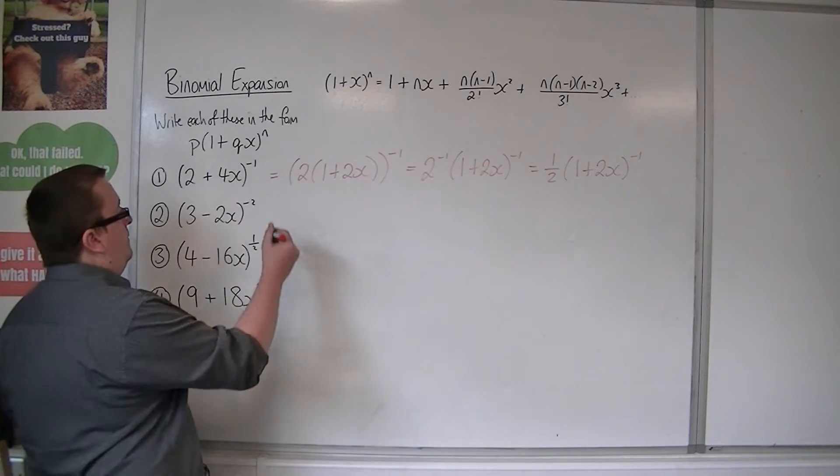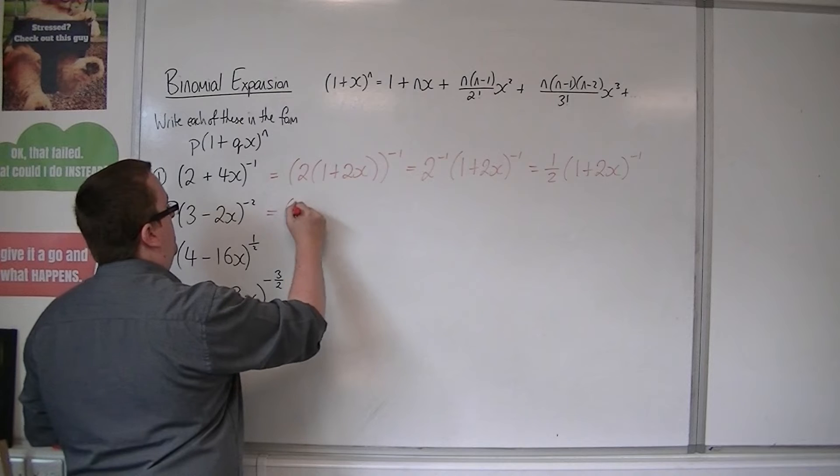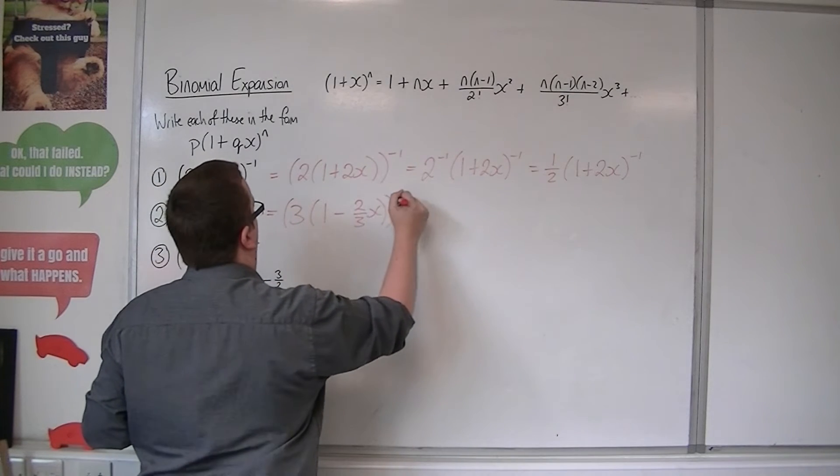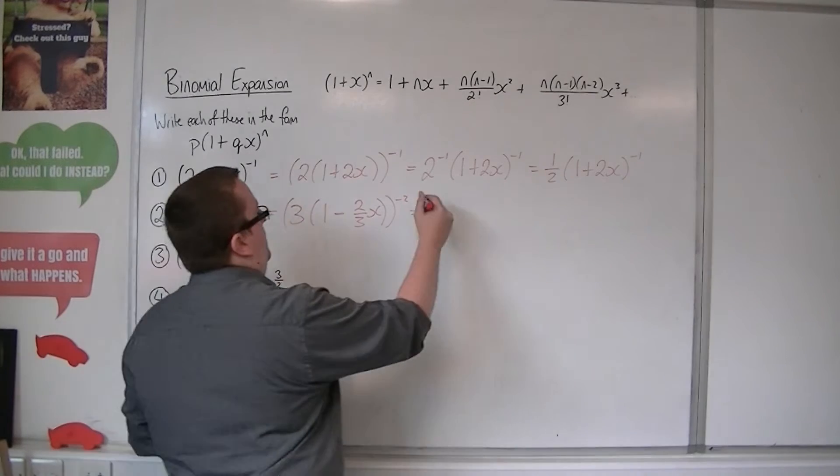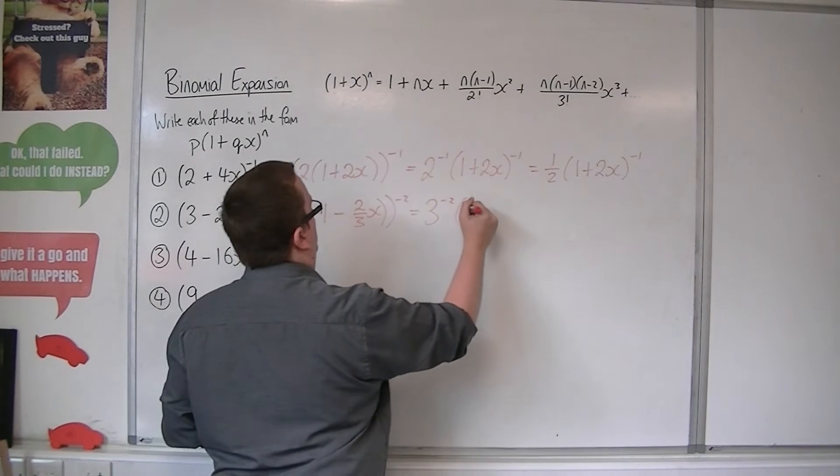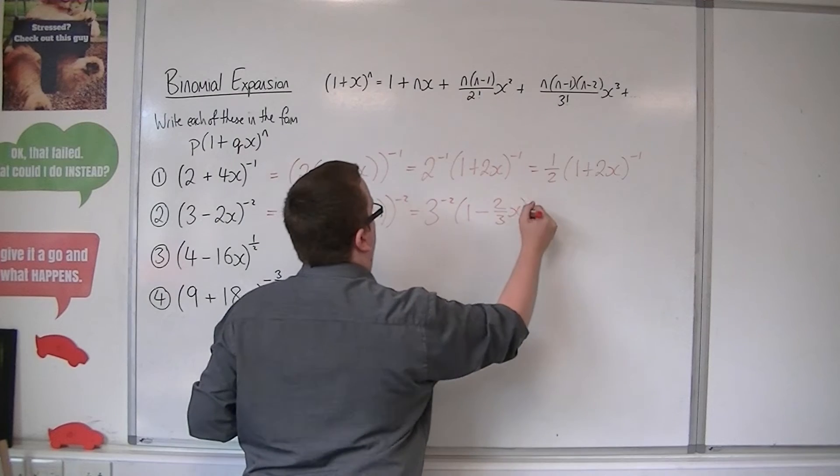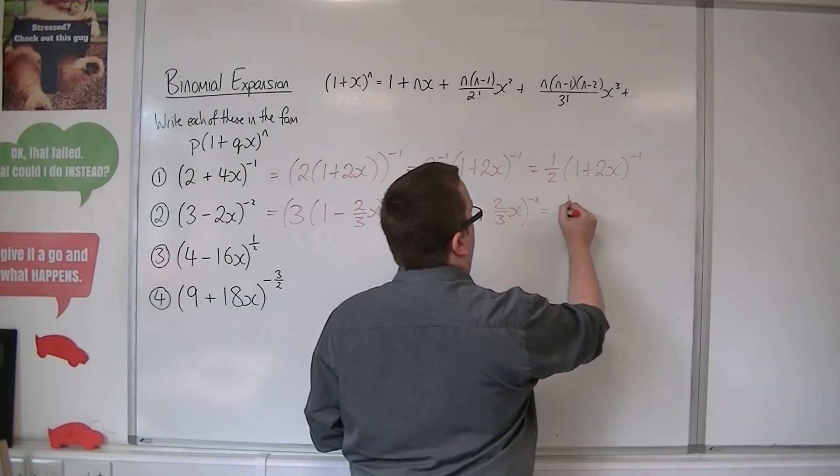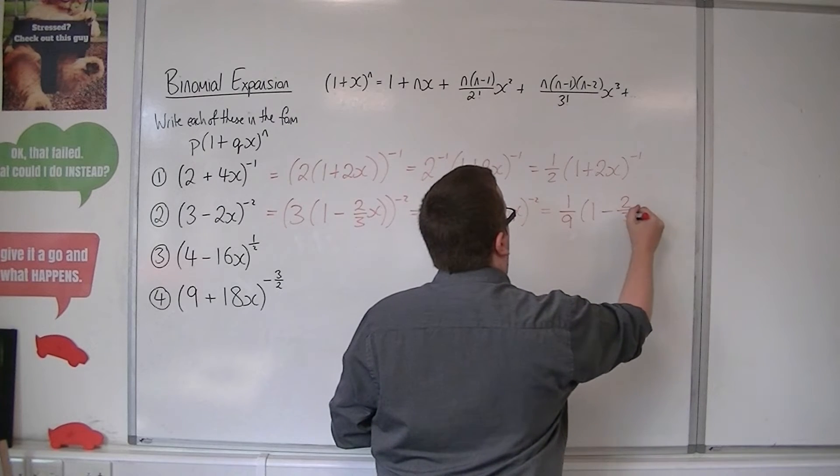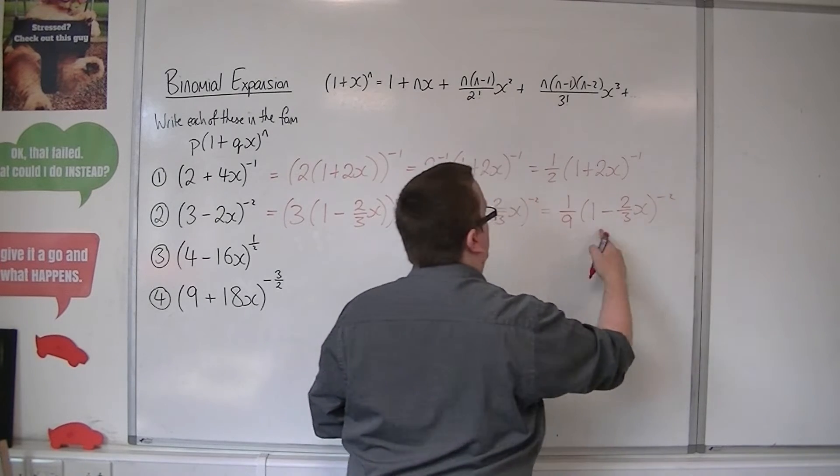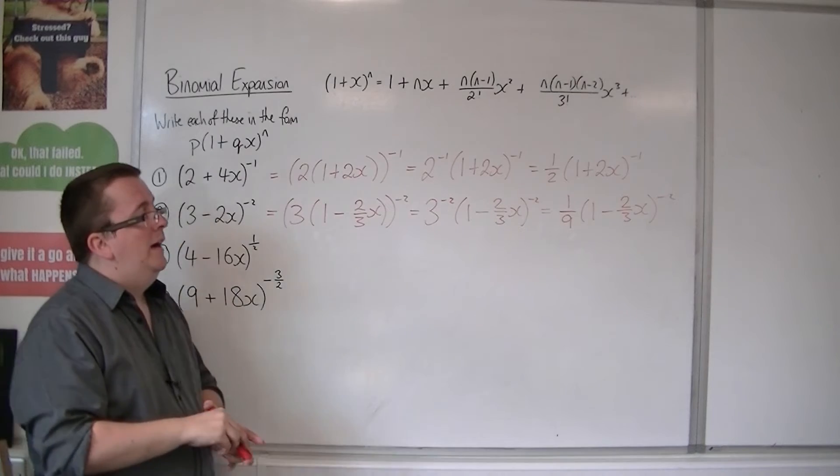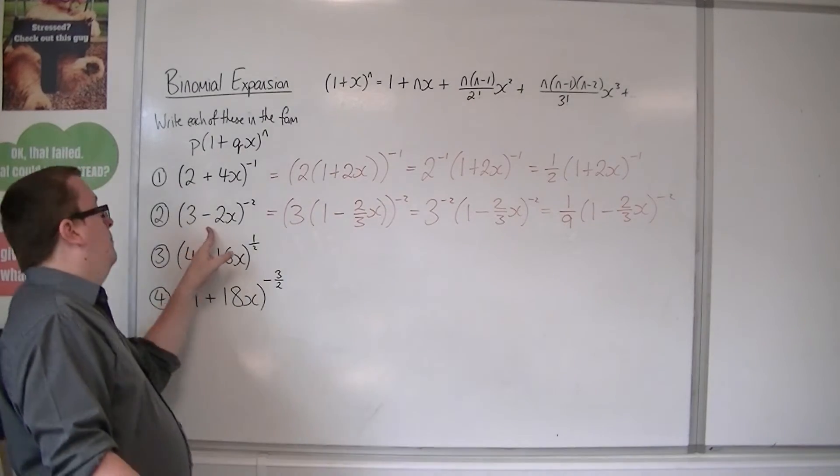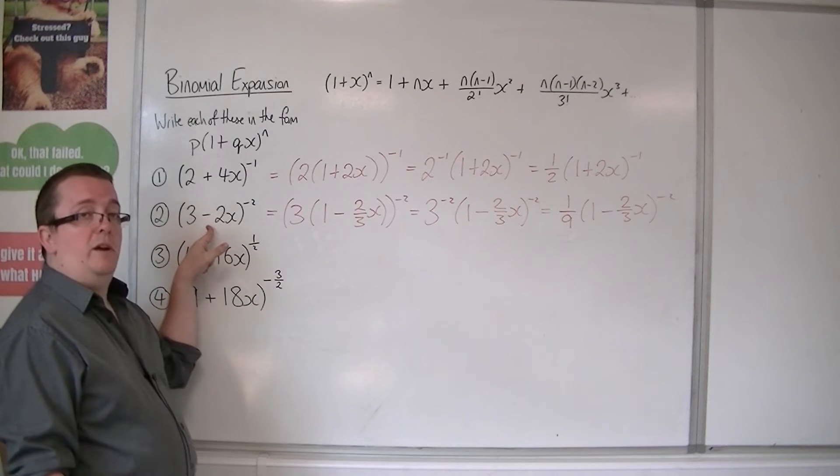So for this next one, let's factor the 3 out of those first two terms. So 1 take away 2 thirds x to the minus 2. So we've got 3 to the minus 2 times 1 minus 2 thirds x to the minus 2. 3 to the minus 2 is just 1 over 9. So I work out what the expansion of 1 minus 2 thirds x to the minus 2 is, and then multiply all of the terms by 1 ninth. And then I've got the binomial expansion of 3 minus 2x to the minus 2.